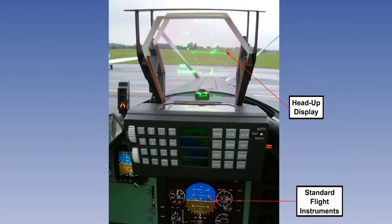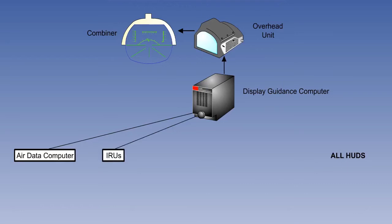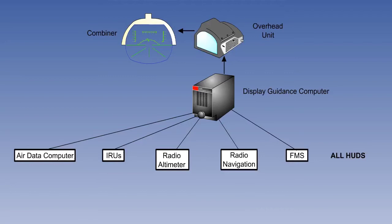Because HUDs are fitted only to aircraft which have other advanced electronics such as air data computers, FMS and EFIS, there is a wealth of information that could be displayed. Every HUD will show information from the air data computer or ADC, the inertial reference unit or IRU, the radio altimeter, the radio navigation instruments, and the flight management system or FMS.